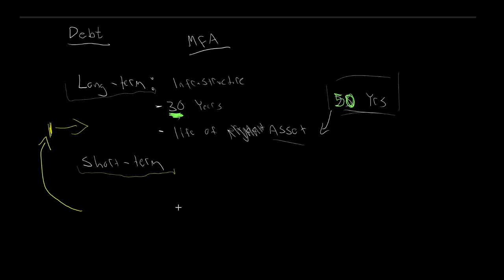Another reason for short-term debt is cash flow management. Even if running a surplus over the course of a year, there can be days, weeks, or months where cash-in doesn't equal cash-out. In these short-term periods, municipalities run into cash flow issues and need essentially a line of credit — similar to how individuals use credit cards for short-term gaps. Over a year they might be balanced, but month-to-month they may need to borrow to equalize cash flows.